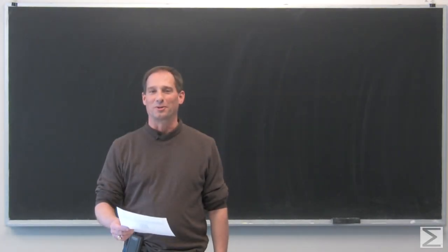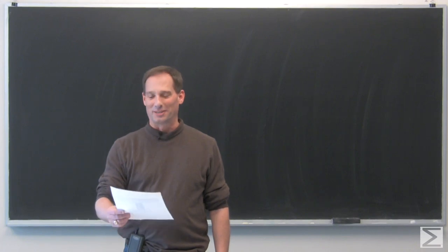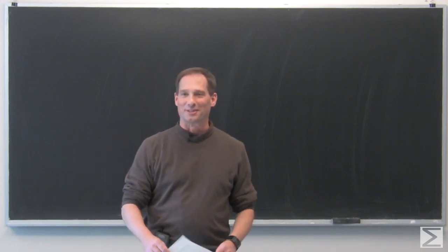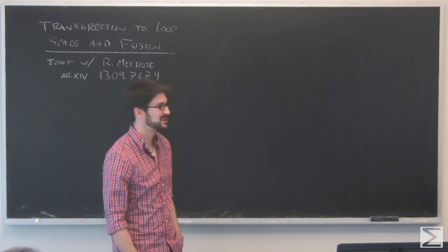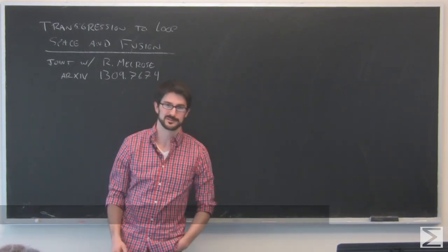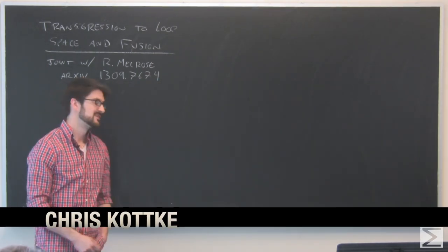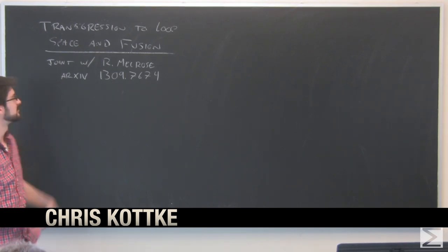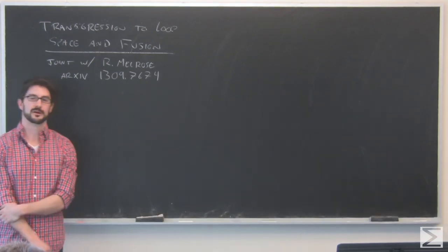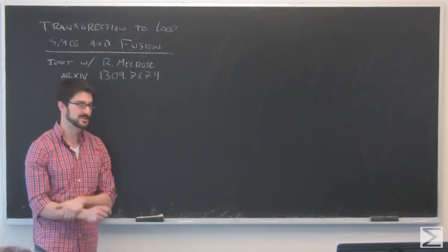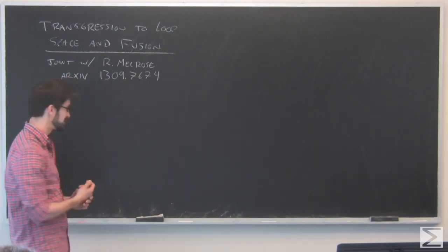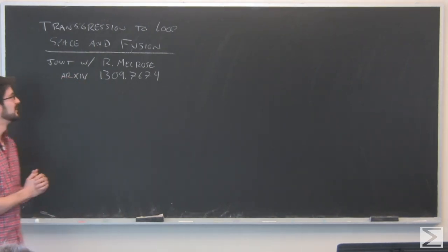It's my pleasure to welcome Chris Kotke of Northeastern University, who will speak to us today on transgression to loop space and fusion. Thanks, Dave. I'm pleased for the opportunity to speak here. This is joint work with Richard Melrose, and there's a pre-print on the archive if you want to read. It's a short 10-page paper with no analysis — it's all just Čech cohomology. It's a nice little result.